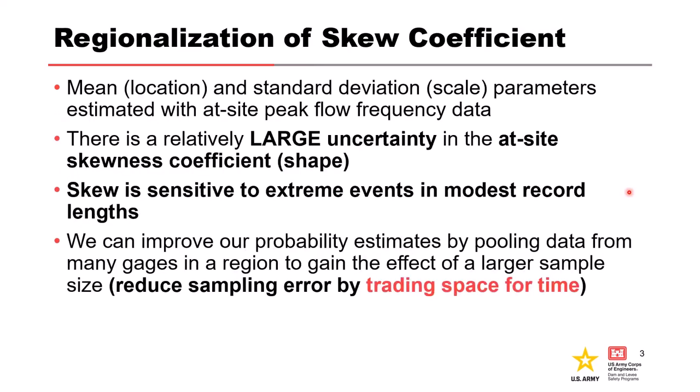The regionalization of the skew coefficient: when doing a typical LP3 distribution, the mean — also the location — and the standard deviation — the scale parameter — are estimated with at-site peak or volume flow frequency data. But there is relatively large uncertainty in the at-site skewness coefficient, or the shape parameter. Skew is sensitive to extreme events in modest or relatively short record lengths. We can improve our probability estimates by pooling data from many gauges in a region, essentially reducing sampling error by trading space for time. Our single gauge only has so much of a record, but there are lots of gauges around it that might have a similar record, and we can pool all those together to improve our skew estimate.